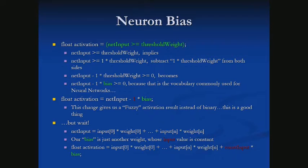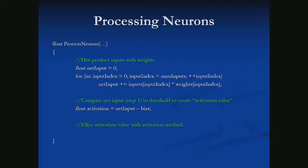The bias is just another weight, and its input is always negative one. So now we could just do: float activation equals input times weight, plus input times weight, plus input times weight — with the bias being one of our weights, with a constant input of negative one. We've updated our process neuron method to include the bias, and we're now getting a continuous value.